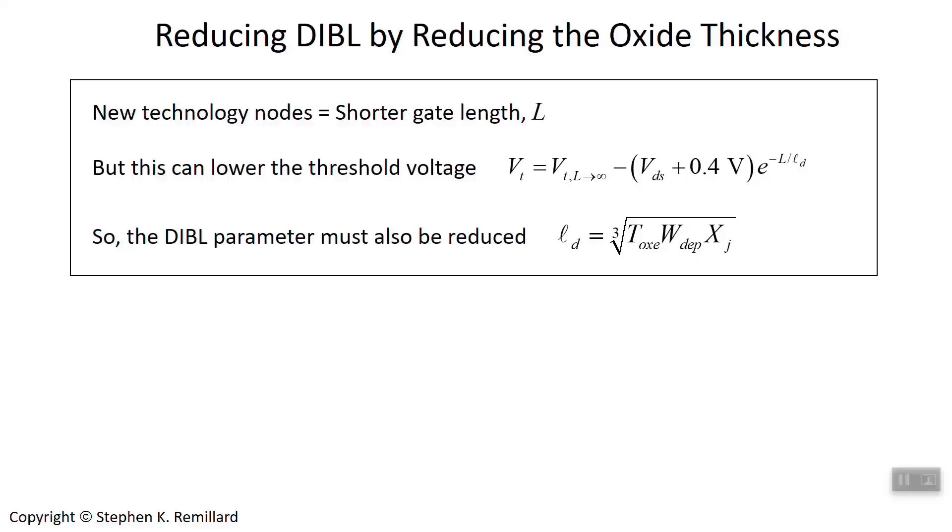This is motivated by the need to maintain the threshold voltage as gate lengths get shorter over time. The threshold voltage can drop when the gate length gets really short.